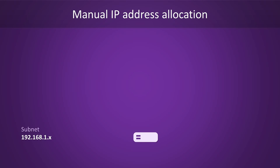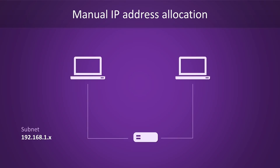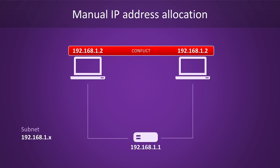In our example network, every host will have an address that starts with 192.168.1. At the center of our network, we have a router that is wired up to two hosts. A common way to assign addresses would be to give our router the .1 address and to give the hosts the .2 and .3 addresses respectively. If someone accidentally gave the same IP address to both computers, we'd have an IP conflict on our hands.